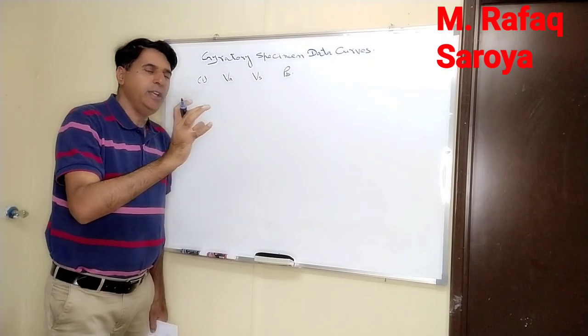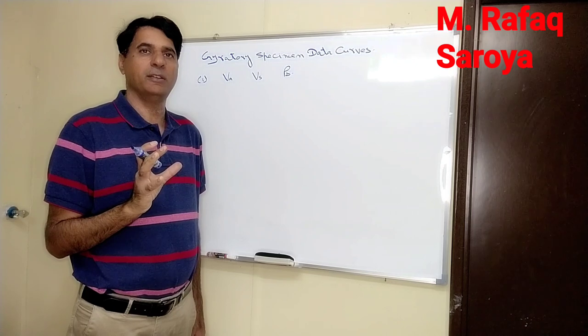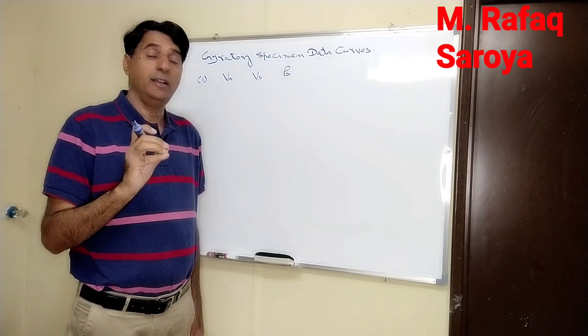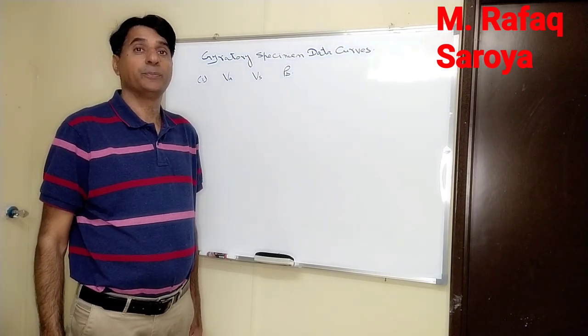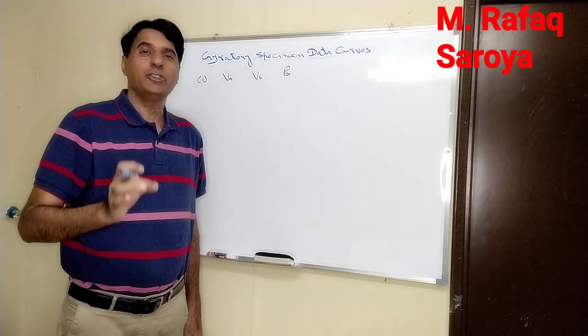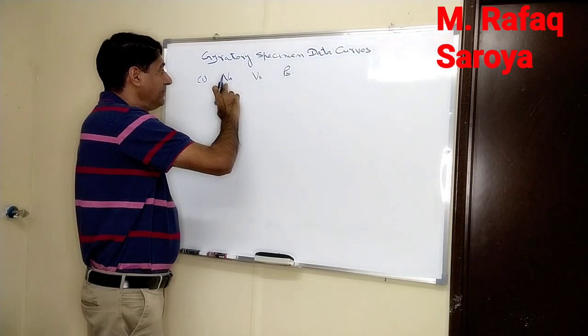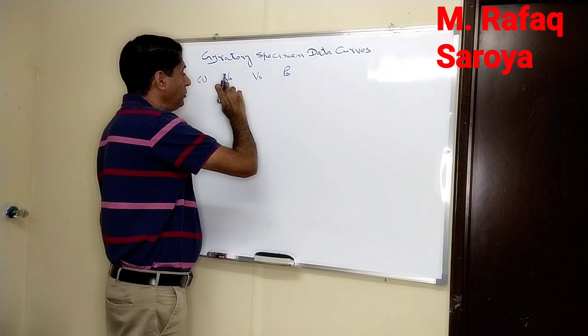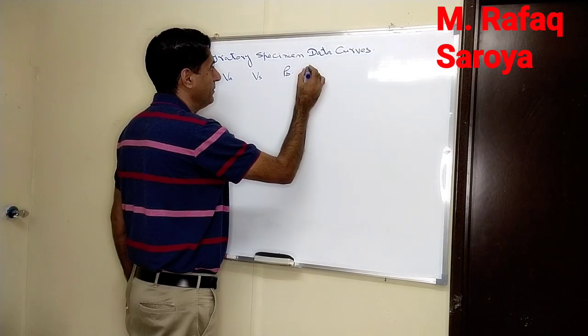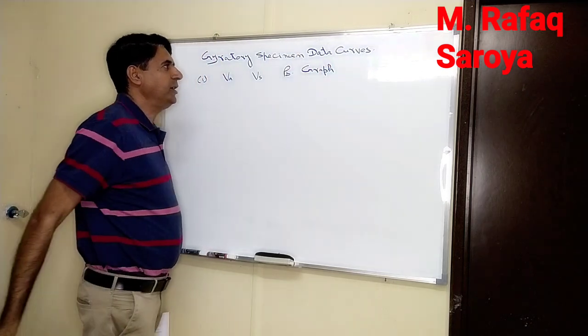Now we have collected all the data for our gyratory specimen. From this collected computer data, we have to draw data curves. The first graph which we are going to plot is between air void versus PB graph.